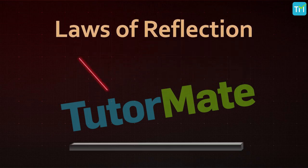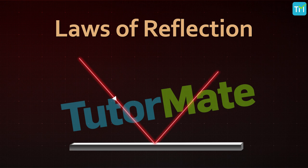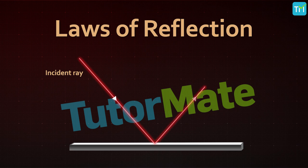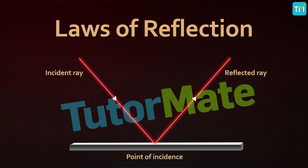When a ray of light strikes a mirror, the ray is reflected in another direction. A ray of light is an idealization; in reality we have a narrow beam of light made up of several rays. For ease of use, we call a narrow beam of light a ray. The light ray which strikes or falls on any surface is called the incident ray, and the ray that comes back from the surface after reflection is known as the reflected ray.